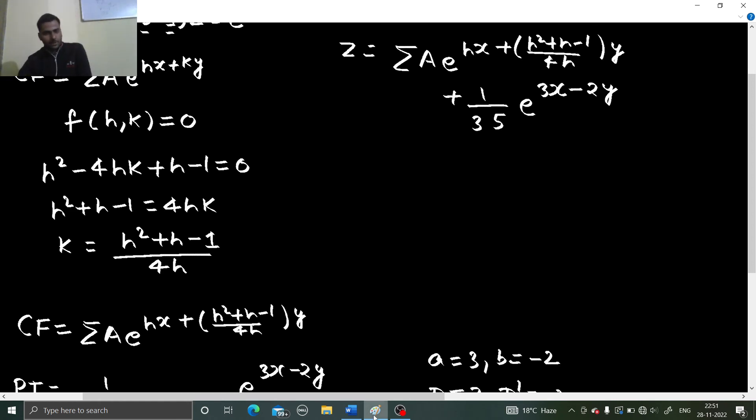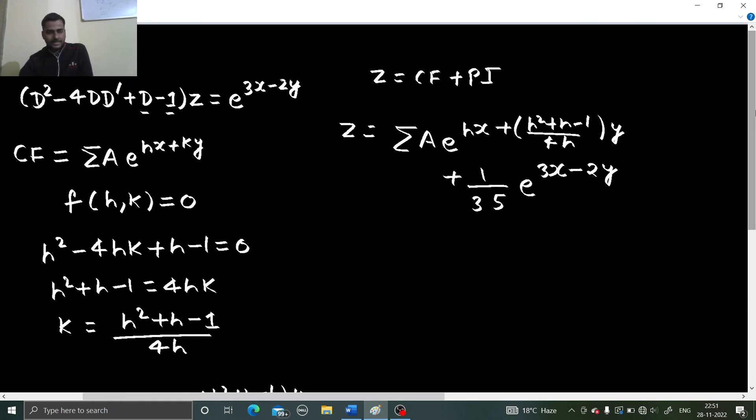And for more such problem as I always mention I have made a playlist, a beautiful one on partial differential equation. So you can visit that. Here cf we found by this method because it was not factorizable further. Neither it was of the form d minus md dash minus a. We have only two format in non-homogeneous to find cf. Pi is found the same way as homogeneous. So that's it from my site. For more such problem I have already told how and where you should visit. Thanks for visiting this video. Thanks again.